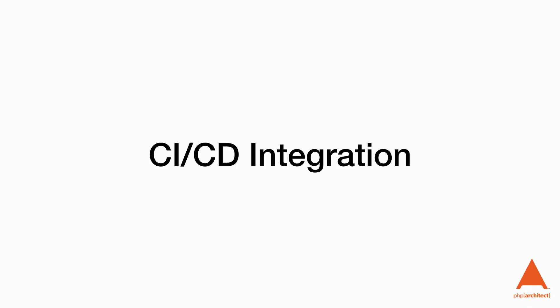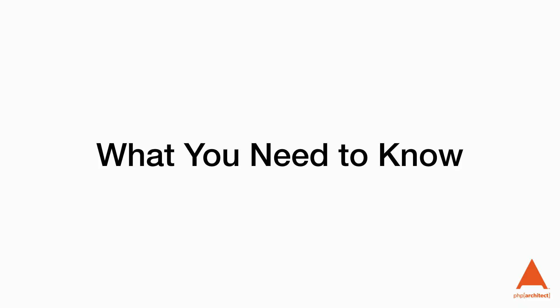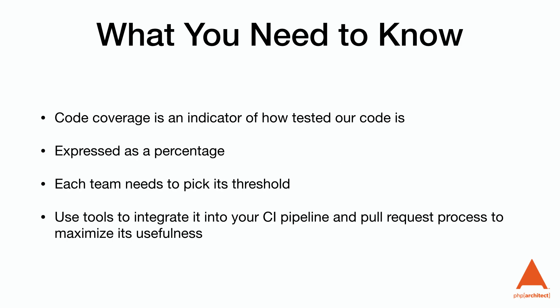Other reports can help you narrow down your focus if you need to increase code coverage. One of the best pieces of advice in this video: make sure that code coverage is part of your continuous integration pipeline. Your CI pipeline can automatically fail if you don't reach a high enough percentage of coverage. In a future video we'll discuss how to use a software-as-a-service product to do this. As a recap, code coverage is an indicator of how tested your code is, expressed as a percentage. Each team needs to pick its own threshold, and you should use tools to integrate it into your CI pipeline and pull request process to maximize its usefulness.